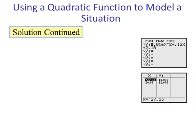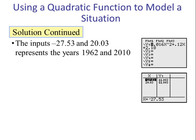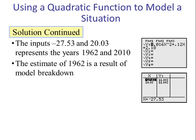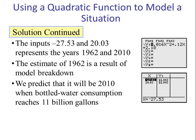What does this mean in terms of the problem? Well, -27.53 corresponds to 1962 because t is the number of years since 1990, and 1990 minus 28 is 1962. 20.03 corresponds to 20 years beyond 1990, which is 2010. The estimate for 1962 is the result of model breakdown. We predict that it will be 2010 when the bottled water consumption reaches 11 billion gallons.